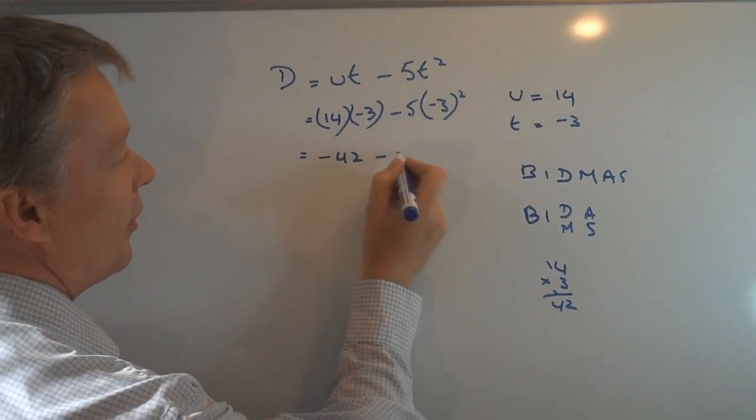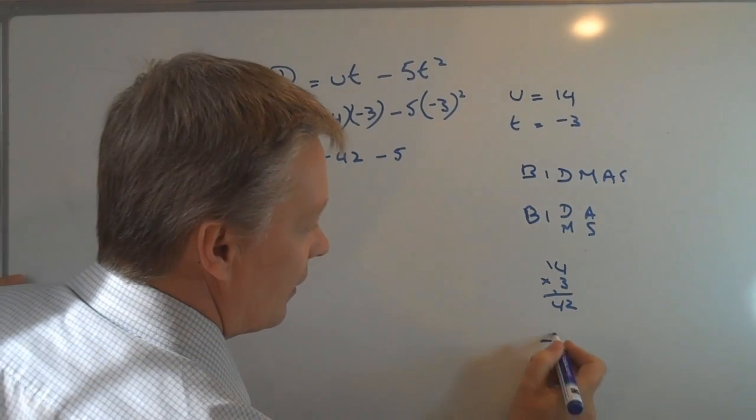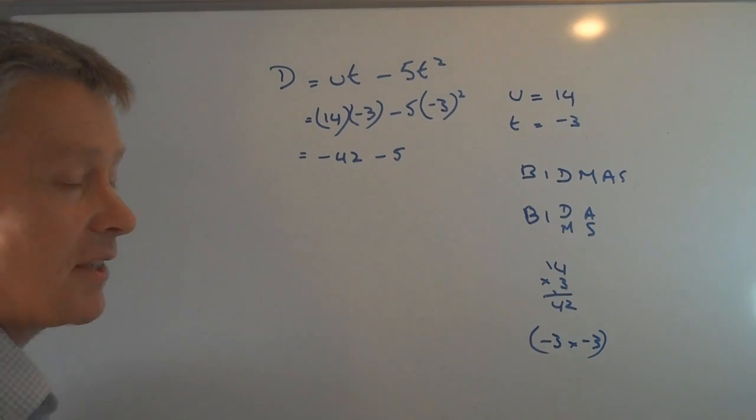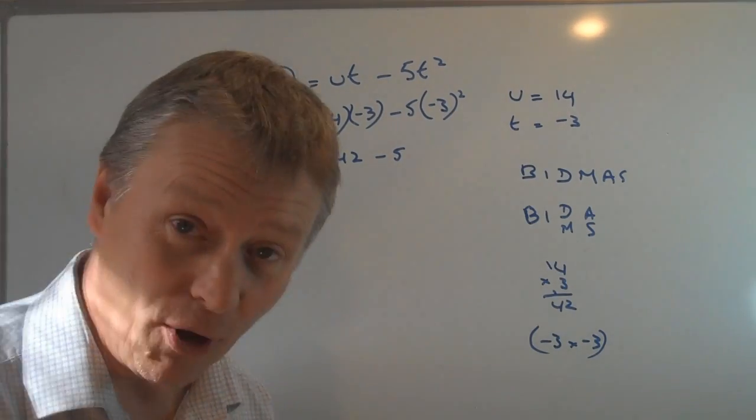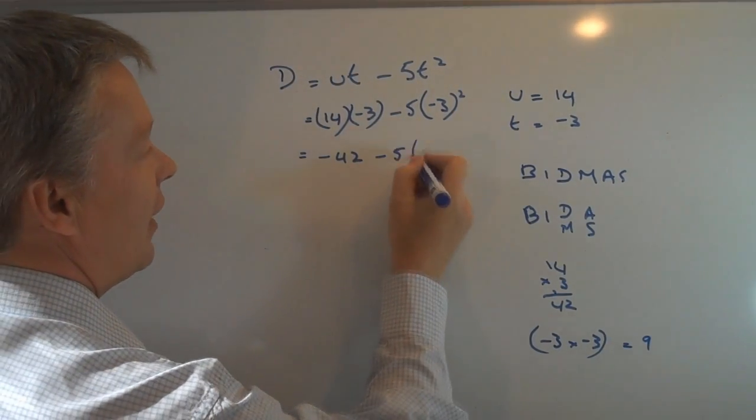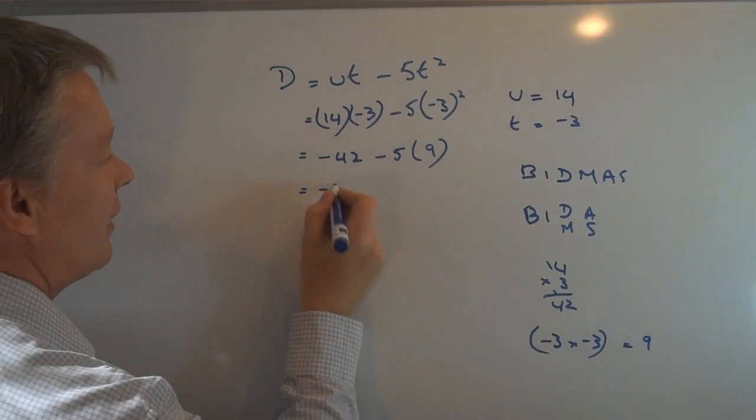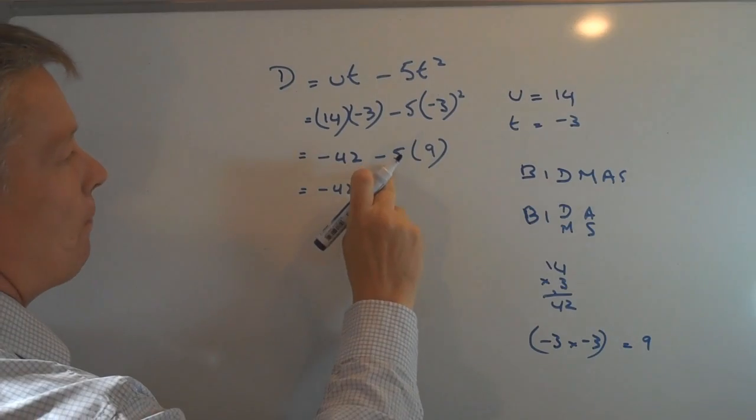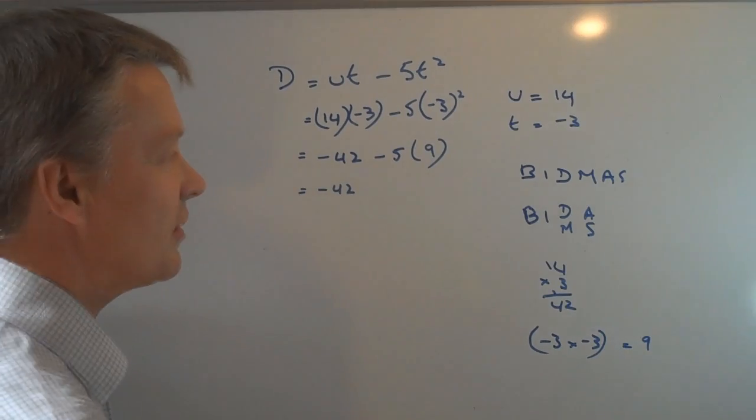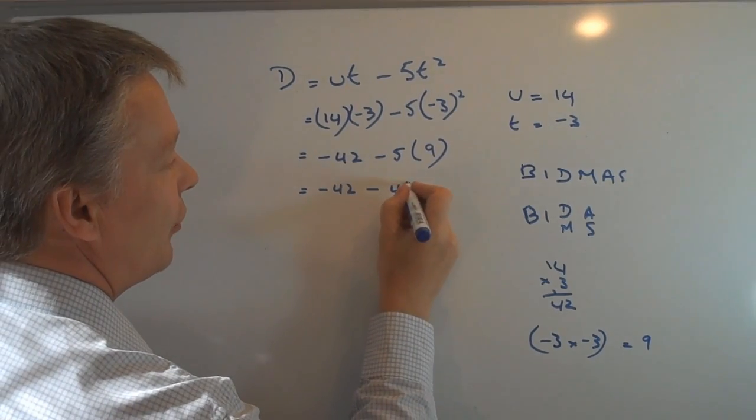On this side I've got minus 5. Now minus 3 squared is minus 3 times minus 3. So a minus times a minus is a positive, so 3 times 3 is 9. So I've got minus 5 times 9. Well a minus times a positive number is a minus number, so 5 times 9 is 45, so minus 45.